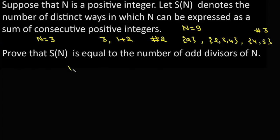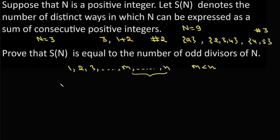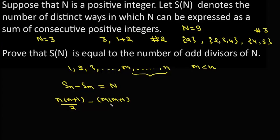Suppose we have the series of natural numbers 1, 2, 3 up to m and then up to n, where m is less than n. The sum of consecutive numbers from m plus 1 to n can be expressed as S(n) minus S(m), which equals n. This gives us n(n+1)/2 minus m(m+1)/2 equals n.